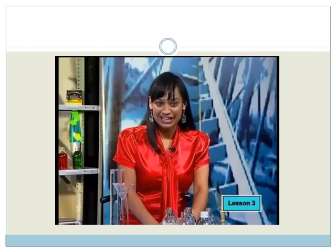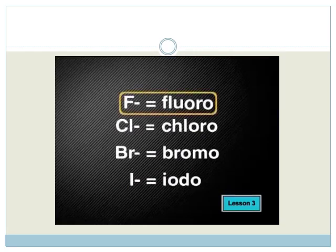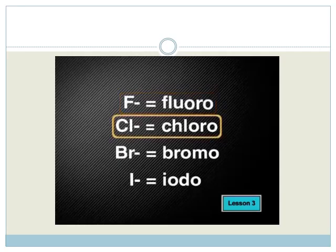To name the other halogens, we use the same approach. The words fluoro, chloro, bromo, and iodo all show us that there is a halogen joined onto the hydrocarbon backbone or parent molecule. Let us try to name another one.